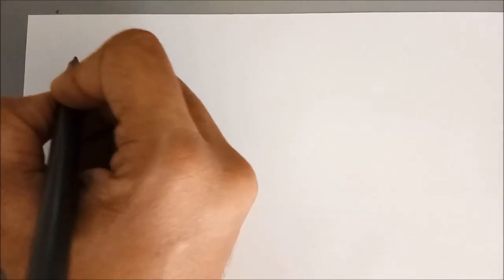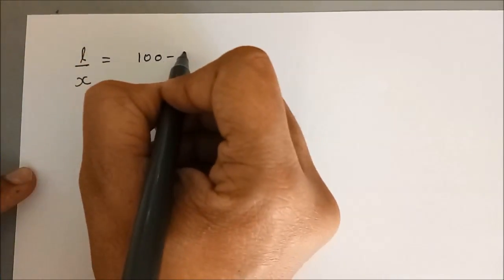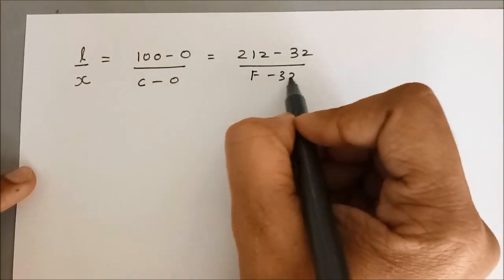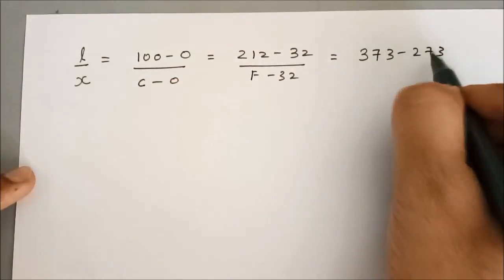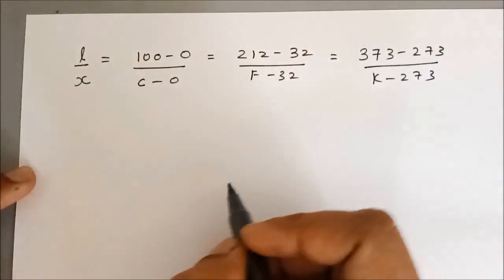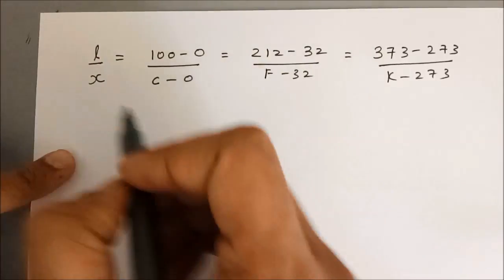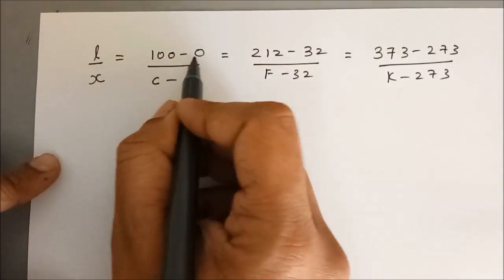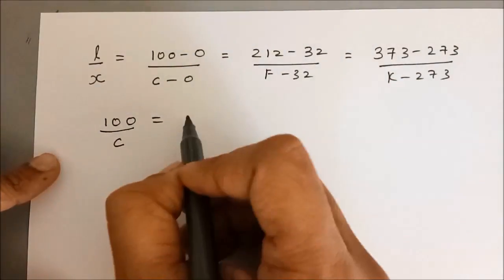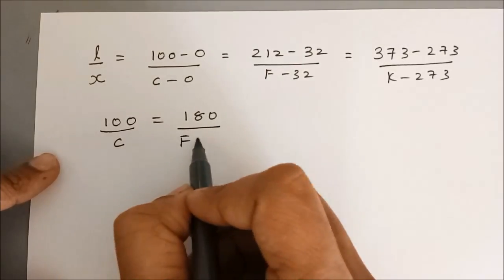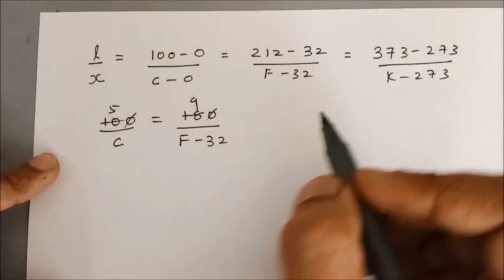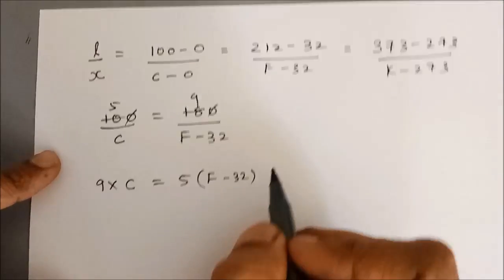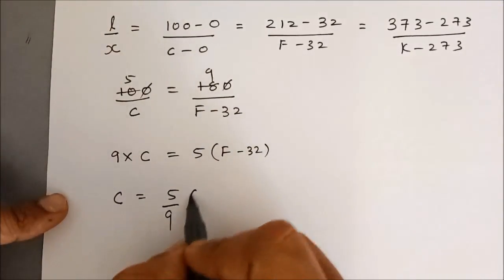So finally, the master formula is: L/x = (100 − 0) / (C − 0) = (212 − 32) / (F − 32) = (373 − 273) / (K − 273). Let us convert Celsius into Fahrenheit by equating these two equations. Since L was the same in all cases and x was also the same, the L/x ratio will be the same for all cases. So 100/C = 180/(F − 32). Simplifying — 100/C = 180/(F − 32) — we can cancel, cross multiply, and get 9C = 5(F − 32), so C = 5/9 × (F − 32). Here we come up with a very important formula, and if you even forget it you can derive it in a small space.